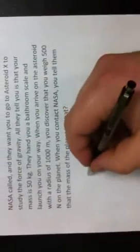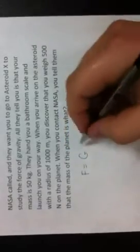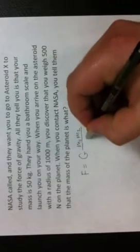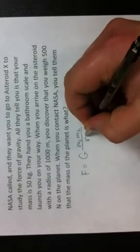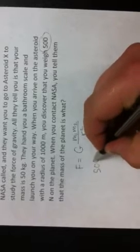For this particular problem, we're going to be using the formula: Force is equal to the gravitational constant times the mass of the first times the mass of the second divided by the radius squared. Now, the force in this case is given to you. It's given to you by this here, 500 newtons. It says that you weigh 500 newtons on the planet. You do that using the bathroom scale. So we'll go ahead and write that in, 500 newtons.